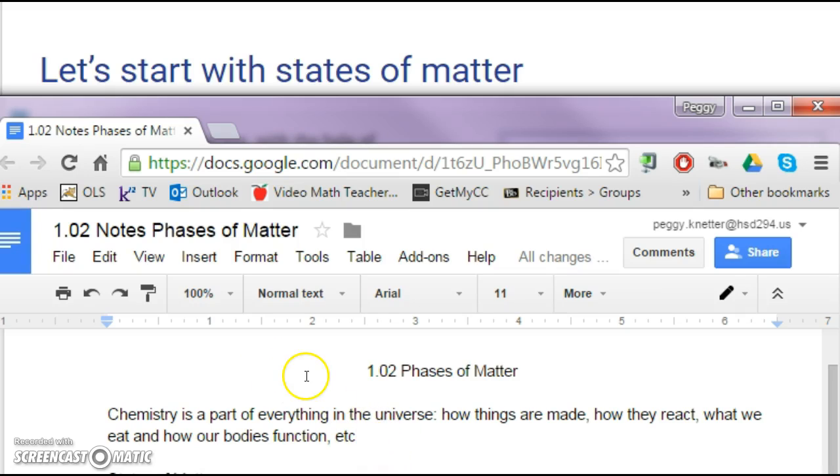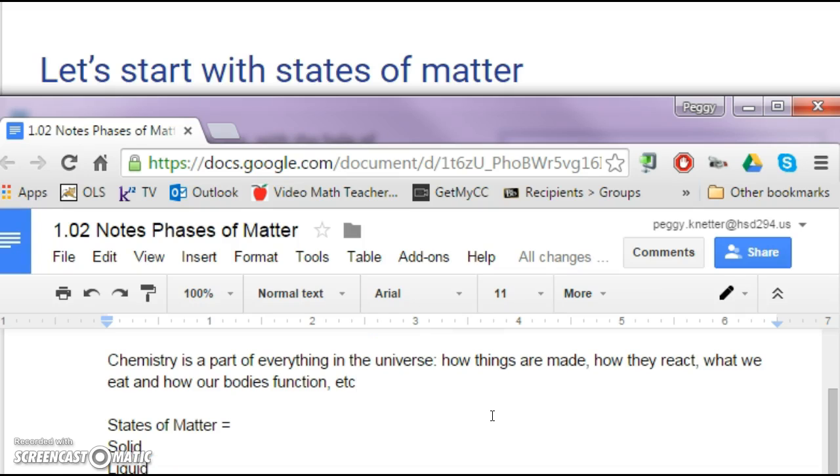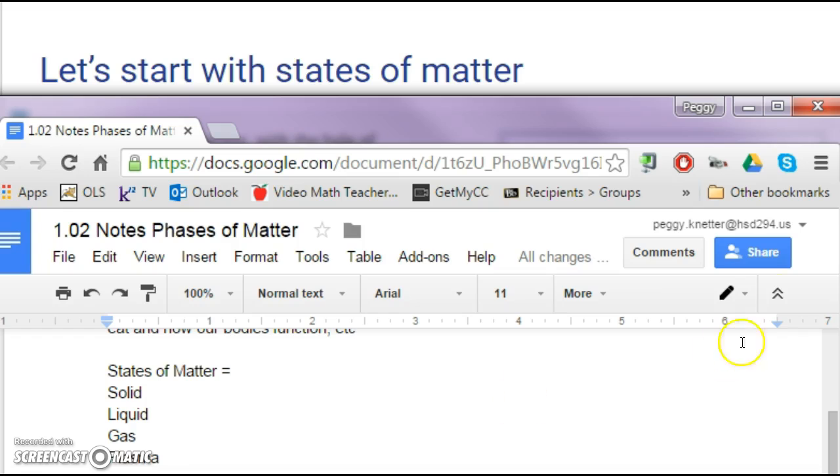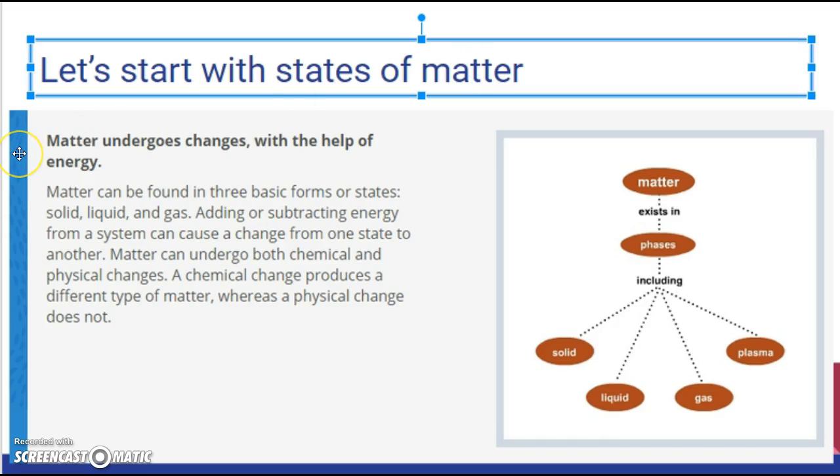Okay, so with chemistry, one of the things is where do you start when it has to do with everything. So where we're going to start with is the states of matter. So you can probably see part of the next word. Do you know what the states of matter are? So there are four states of matter, and we're going to talk about each one of these. I would say leave a little bit of room in between these because we're going to be adding a little bit more. All right. Matter undergoes changes with the help of energy. Matter can be found in three basic forms or states. Solid, liquid, gas.